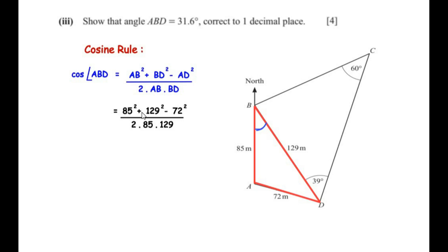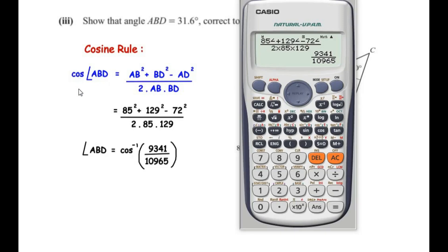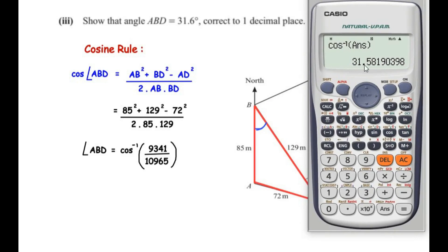Plugging in values: cos(ABD) = (85² + 129² − 72²) / (2 × 85 × 129) = 9341 / 21965. Taking cos inverse of this fraction gives angle ABD = 31.58°, which rounds to 31.6 degrees. We have shown that angle ABD = 31.6 degrees.